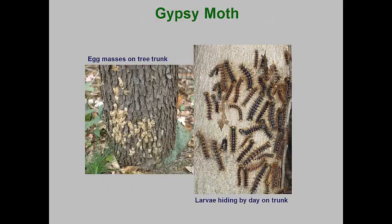Gypsy moth often builds up large populations, especially in areas it has recently invaded. Low populations are often missed by the average homeowner, even when defoliation is reaching 50% of the tree canopies. Eventually the populations explode and cover tree trunks with egg masses, and the masses of larvae on the trunks are hard to miss. At this time, tree canopies disappear and the falling frass pellets can sound like rain even during the day and night.